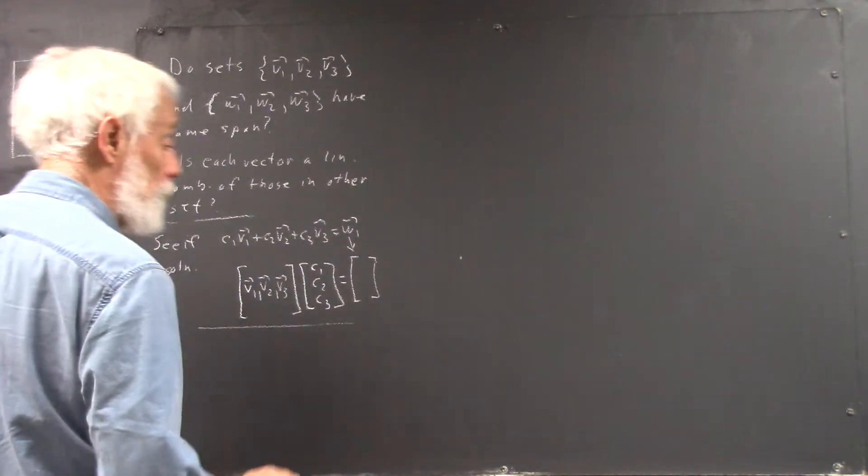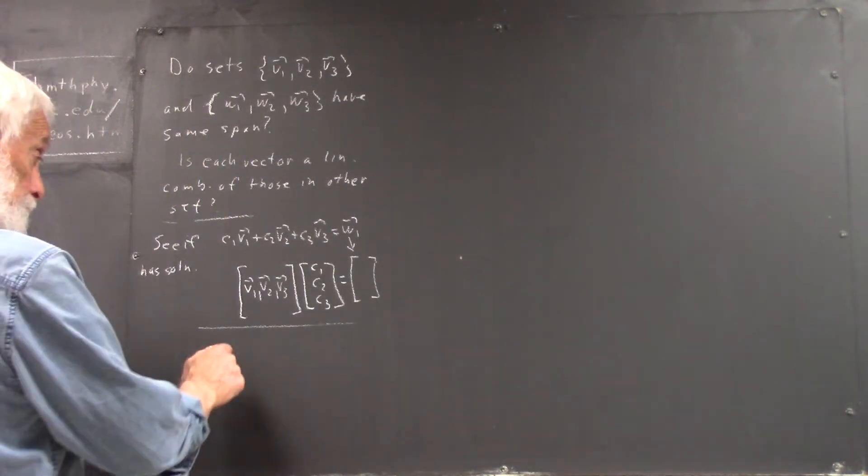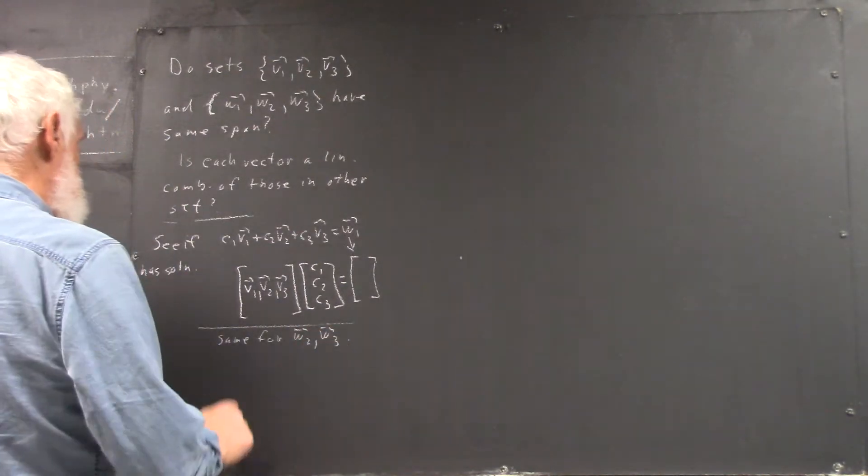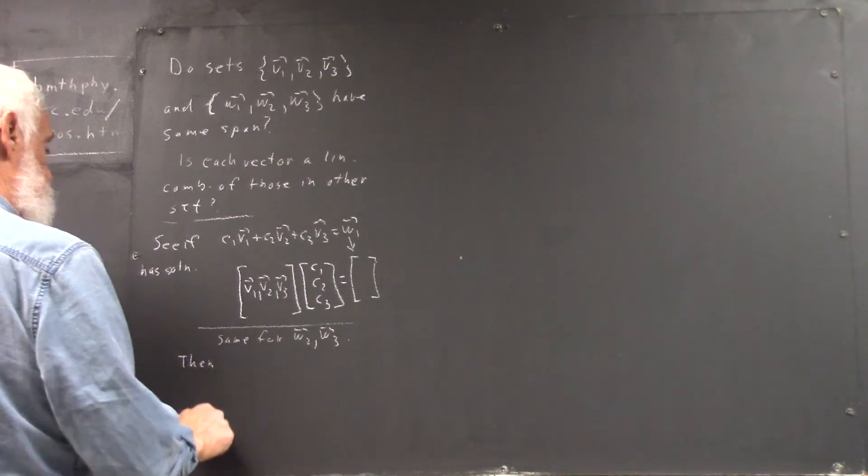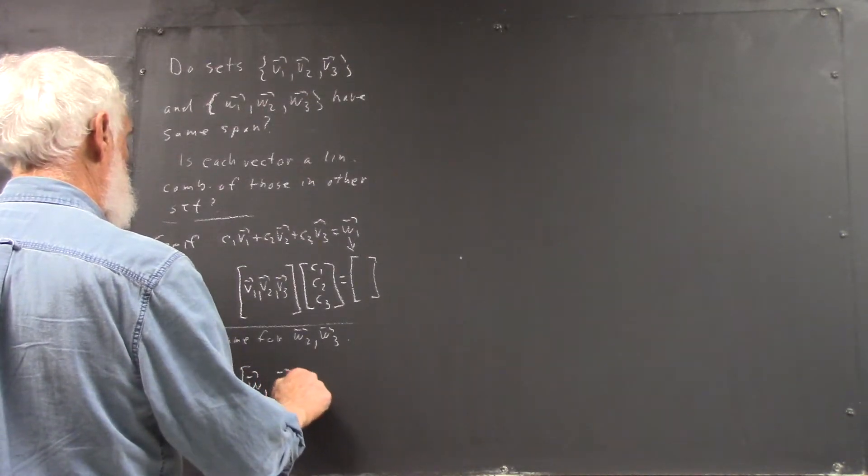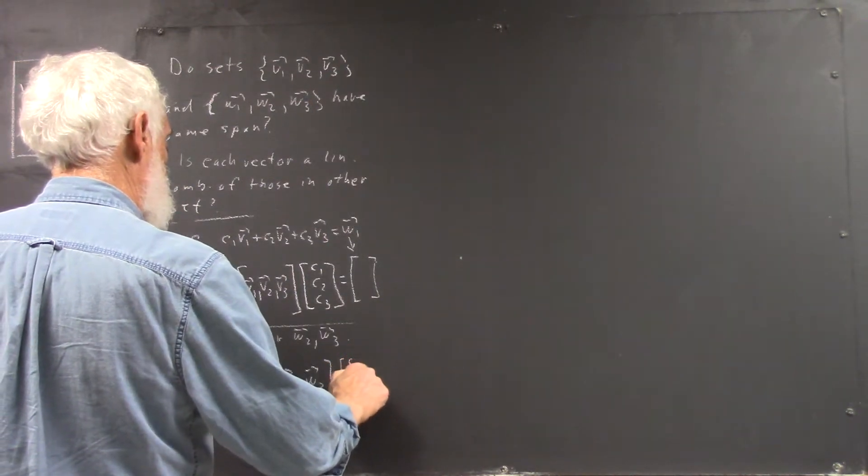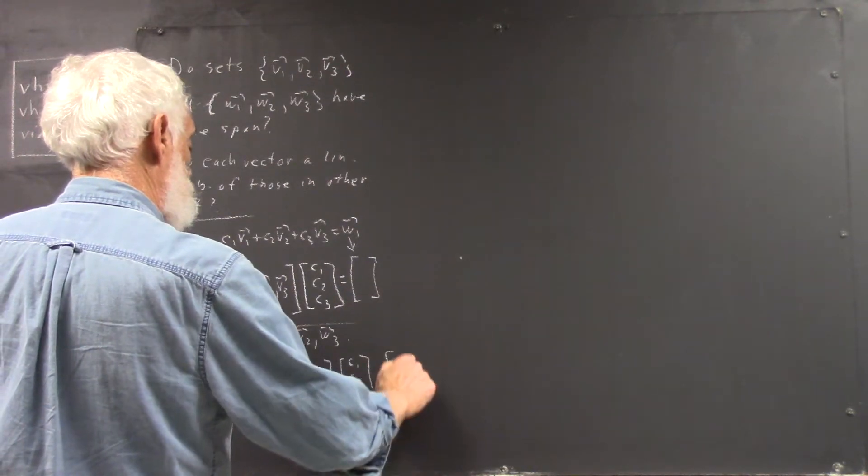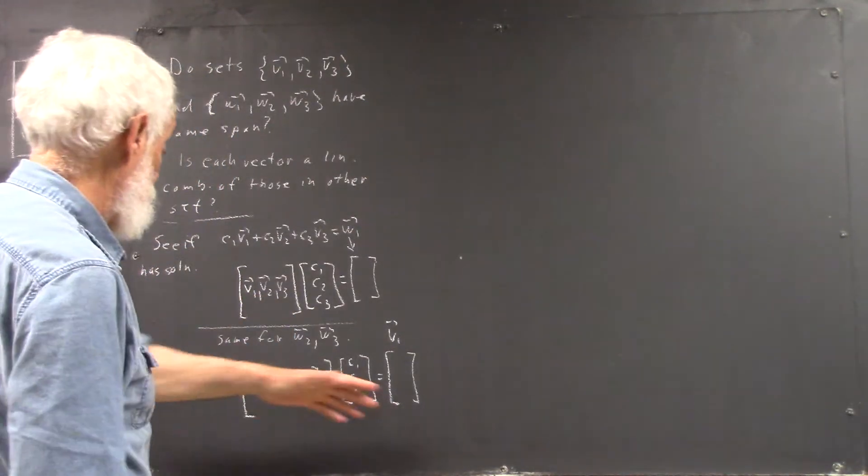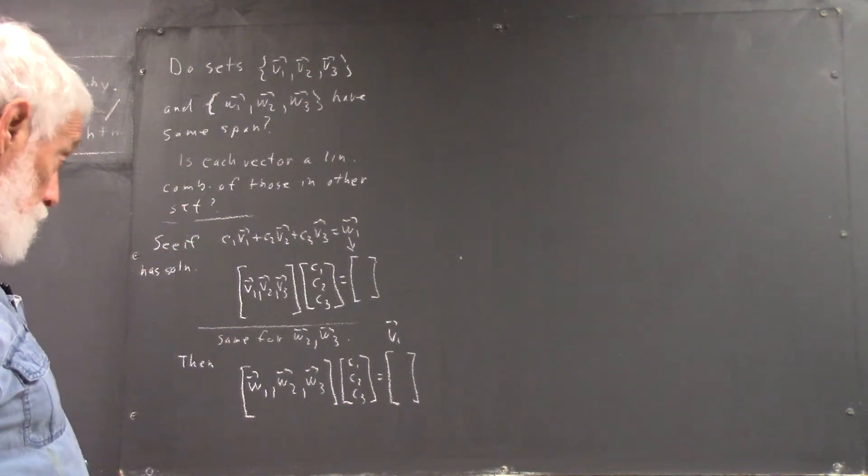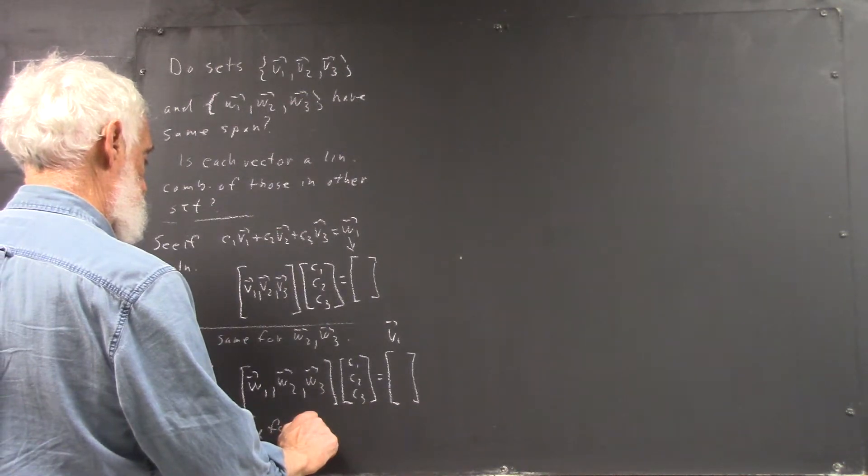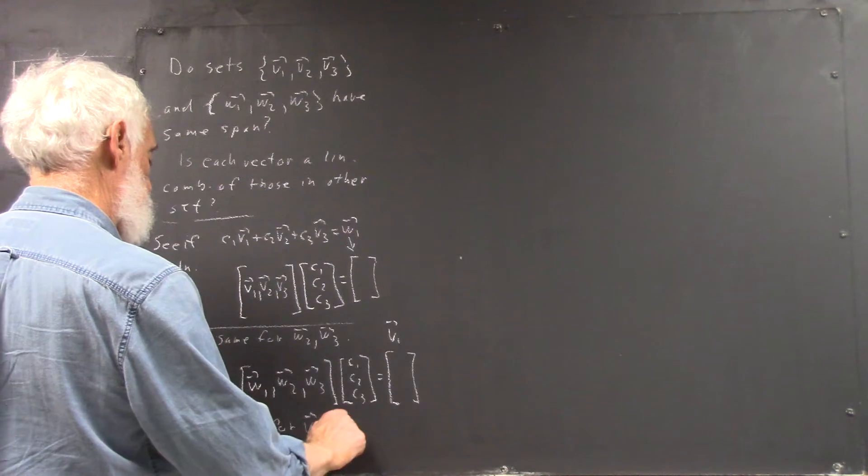Then you could do the same for W2 and W3. And then you would have the same argument. So, you'd have W1, W2, W3 column vector multiplied by C1, C2, C3 equals this, where this would be V1. There's a better notation for that, but you should get the idea. OK, so that would kind of be a brute force method of doing that. And then the same for V2 and V3.